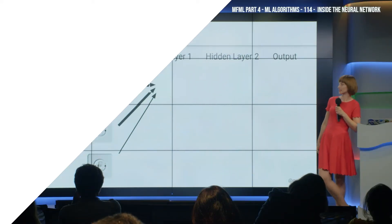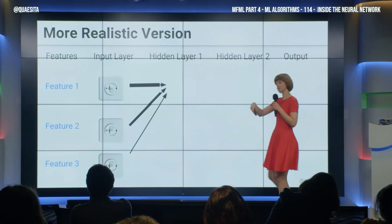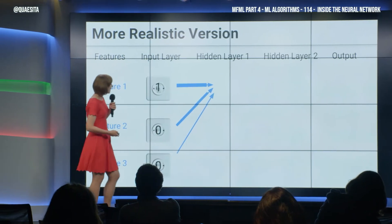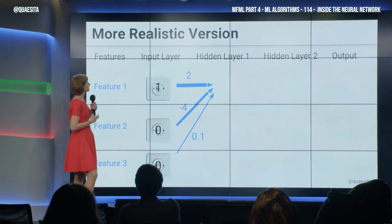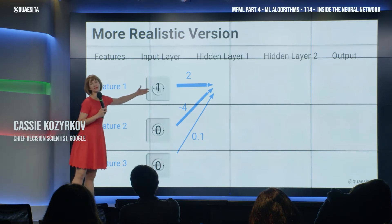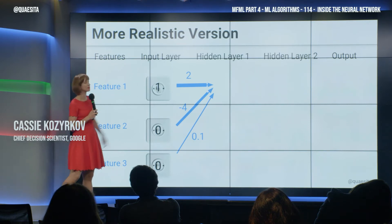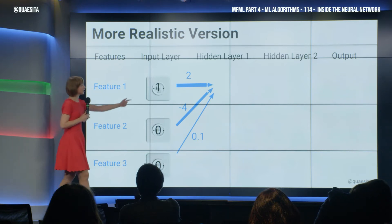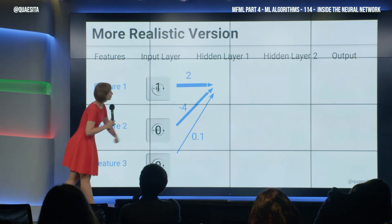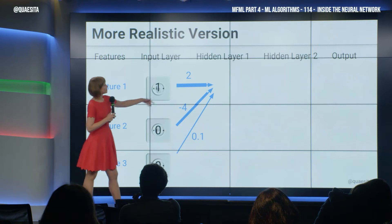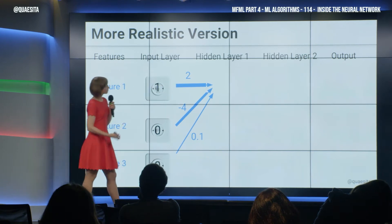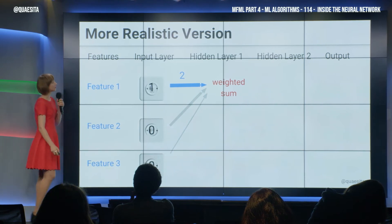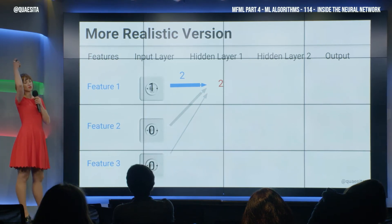Let's see what it looks like in a more realistic setting. We have some binary features — light switches on and off — and we are going to combine them by taking a weighted sum. This input doesn't have to be binary; we'll use binary data just to keep it simple. Here are our column headings, and our first row says one, zero, zero. We take a weighted sum, so our weights are numbers, and zero times anything is zero, so our weighted sum result is two.